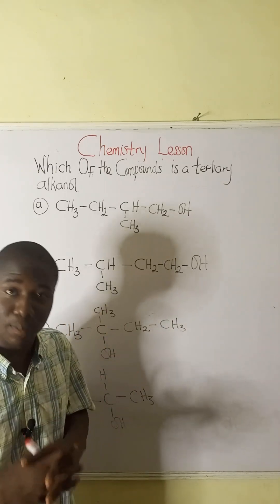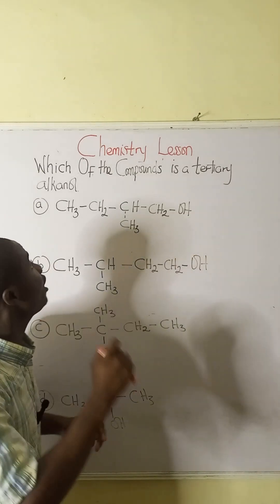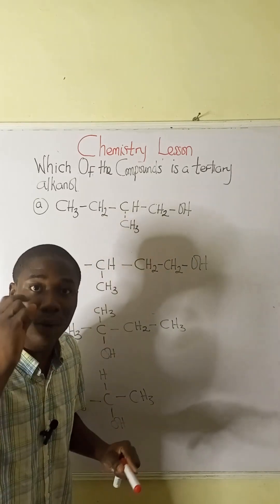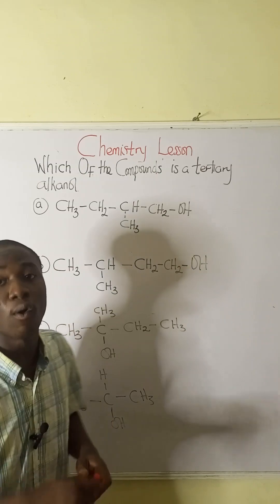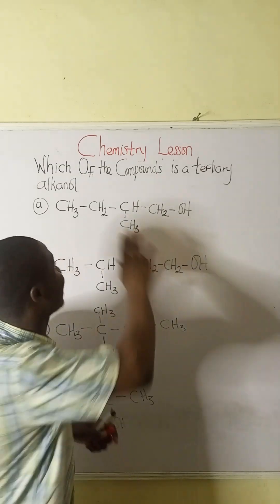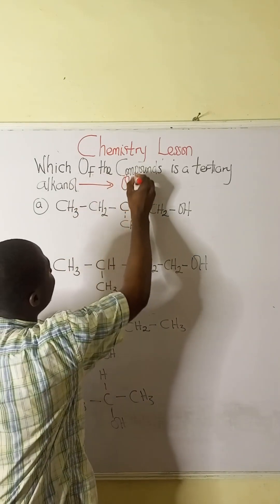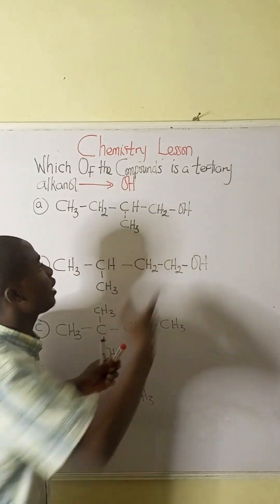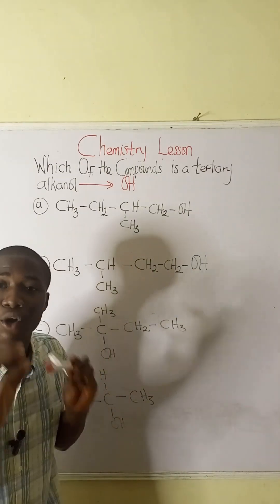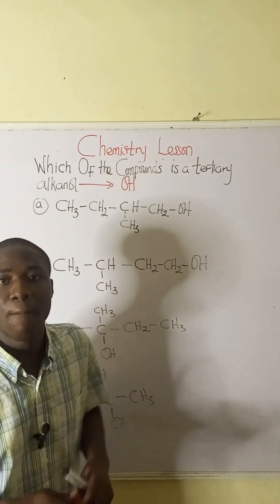Let's solve this practice question together, which asks: which of the compounds is a tertiary alkanol? First of all, to identify an alkanol, that compound will have the OH functional group. You can see that all these compounds here have the OH functional groups, so they are all alkanols.